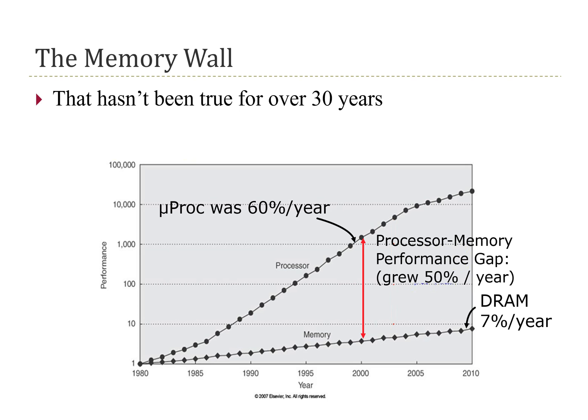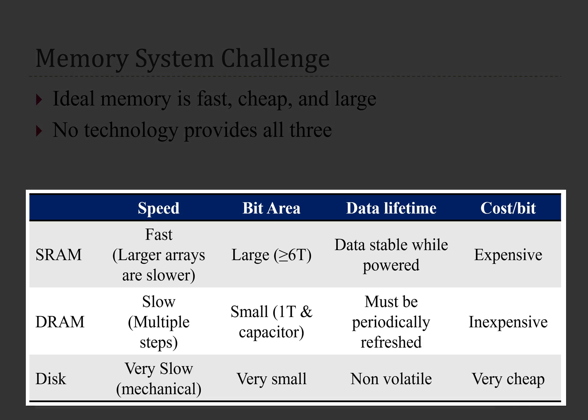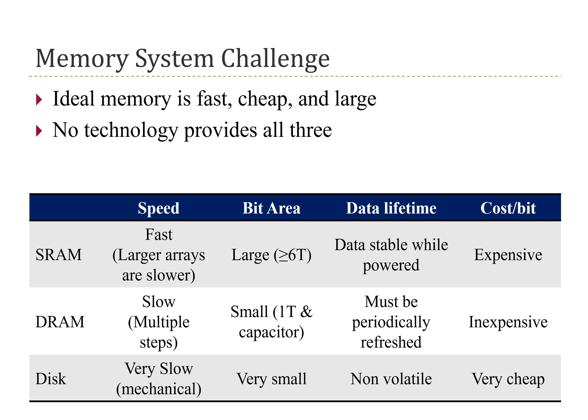The challenge that designers have to deal with is: how do we make a memory system that appears to be ideal? One that is fast, cheap, and also has large capacity. The challenge is that there's no existing technology that provides all three of these features. This table shows the three common types of memory technologies available, and each of these different technologies have different trade-offs.